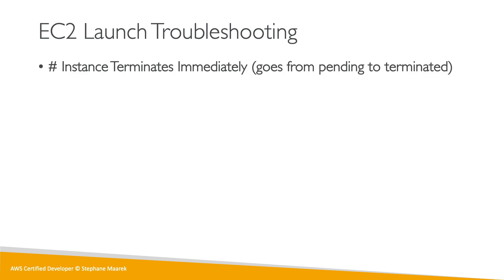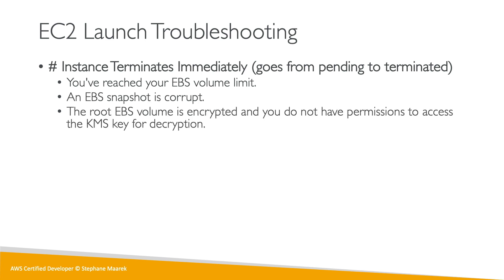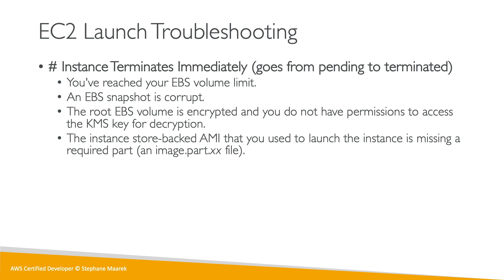The most important scenario: if the instance terminates immediately — going from pending state to terminated right away — you were able to start it but something went wrong. You must remember these four reasons: (1) you've reached your EBS volume limit, (2) your EBS snapshot is corrupt, (3) your root EBS volume is encrypted and you don't have permission to access the KMS key for decryption, or (4) the instance store-backed AMI is missing a part. Learn these four reasons — they appear on the exam.